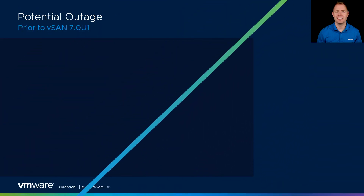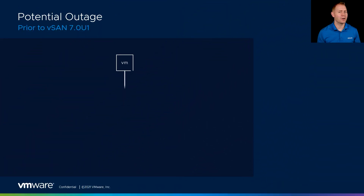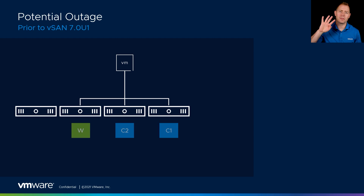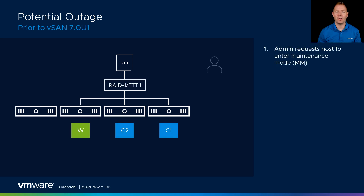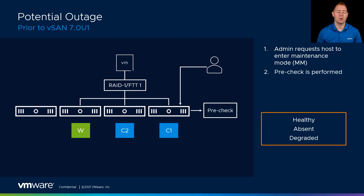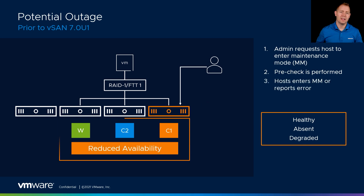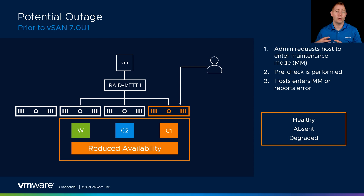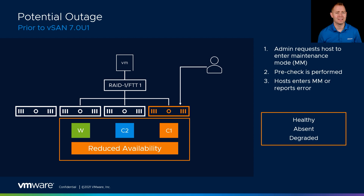Let's walk through a scenario with a version prior to 7.0 U1. Let's say we've got a four-node cluster and our administrator wants to put one of those hosts in maintenance mode, so they right-click and do Ensure Accessibility. With Ensure Accessibility, we take away the resource, assuming we can, and then start a 60-minute timer. That 60-minute timer says if this host doesn't come back, we'll kick off a resync and heal our objects. Luckily, we've got a four-node cluster, so we can do that.